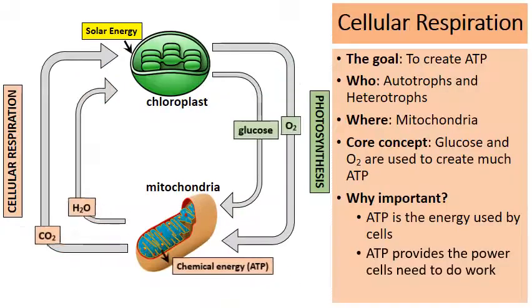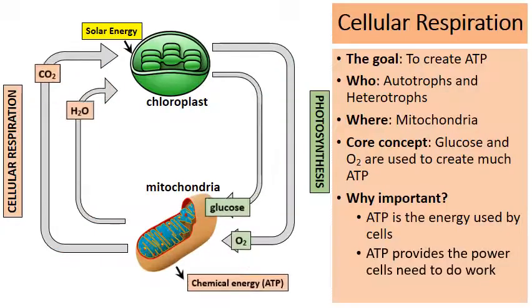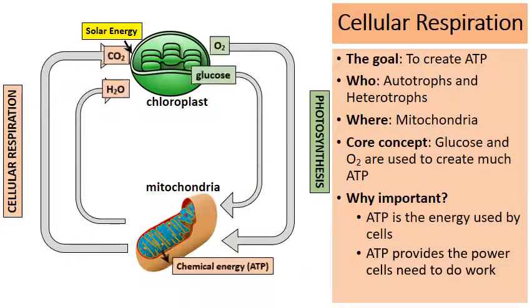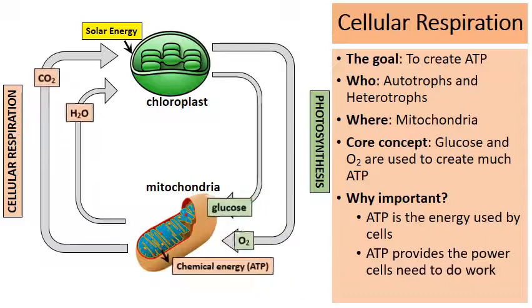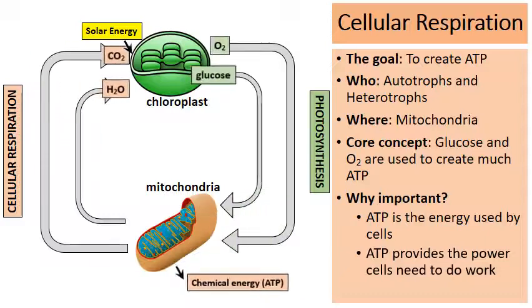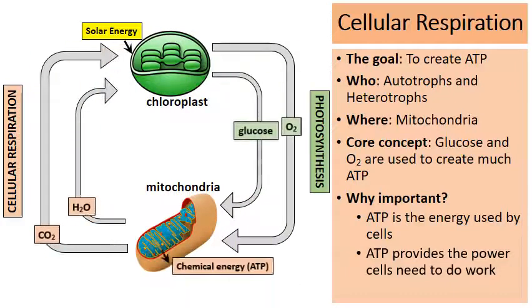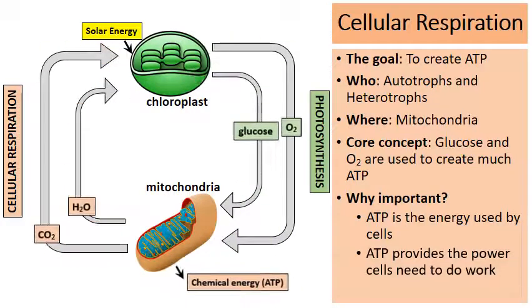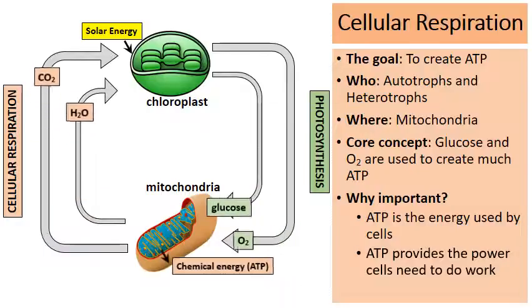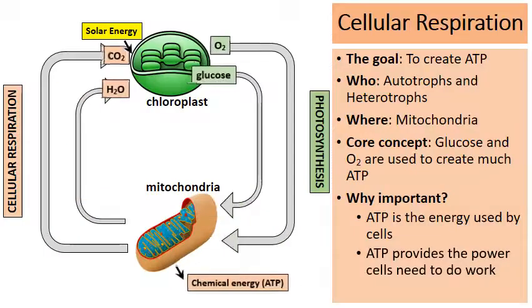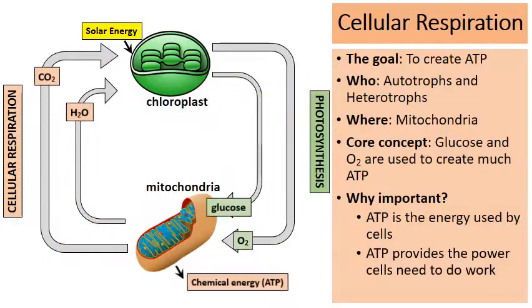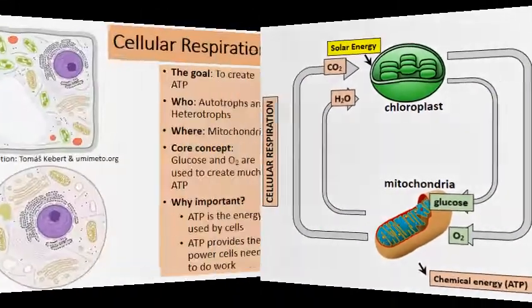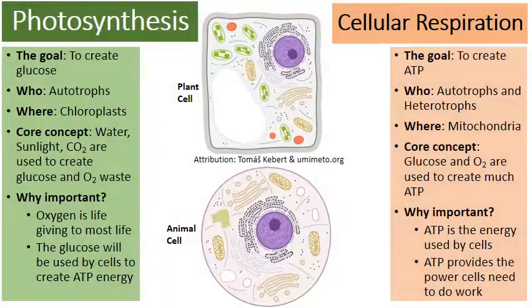Notice what comes out of the mitochondria — waste comes out: water waste and carbon dioxide waste, which can be used by the chloroplast to do photosynthesis. You can see how these two processes are connected to one another.